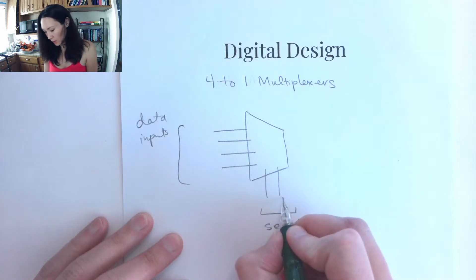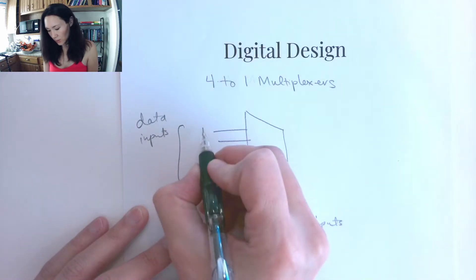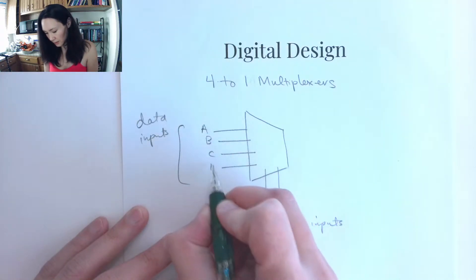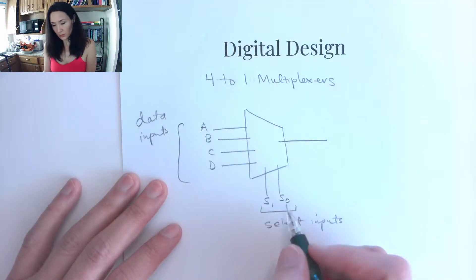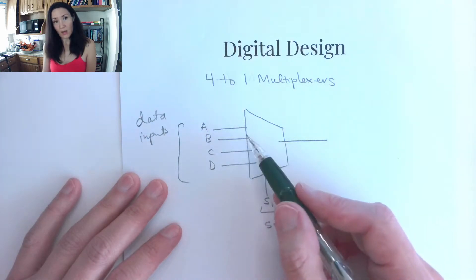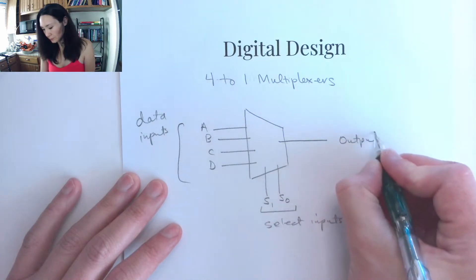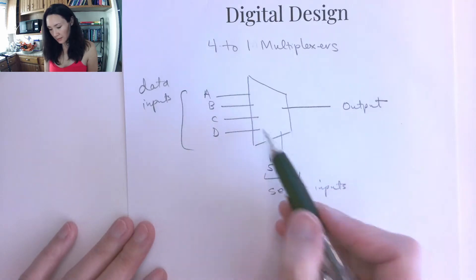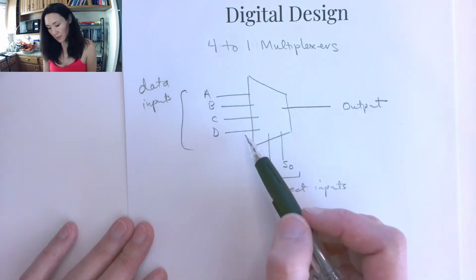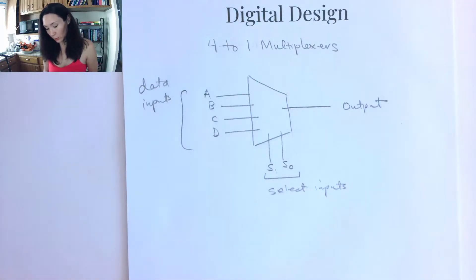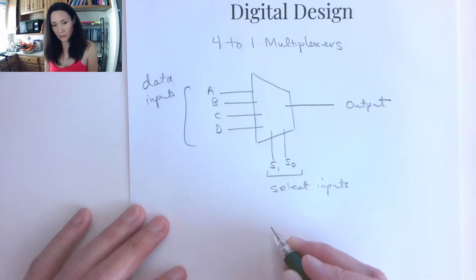We can label these: we'll call them select sub zero and select one, and then we can call the data inputs A, B, C, D. Here's how it works: depending on what comes into these select lines determines which one of these input lines gets grabbed and piped to the output. That means if we select one and pipe it to the output, it doesn't matter what's coming in on any of the other inputs. So on our truth table, we're going to have quite a few don't cares.